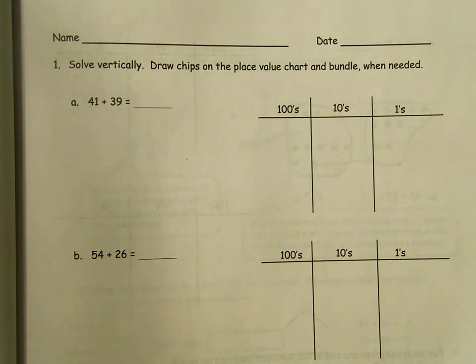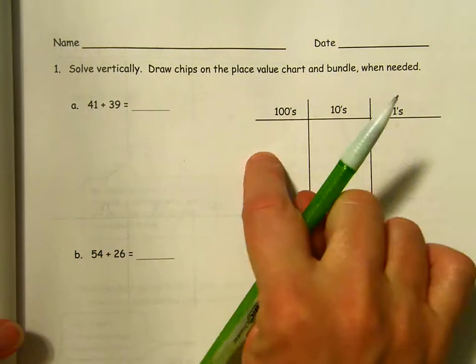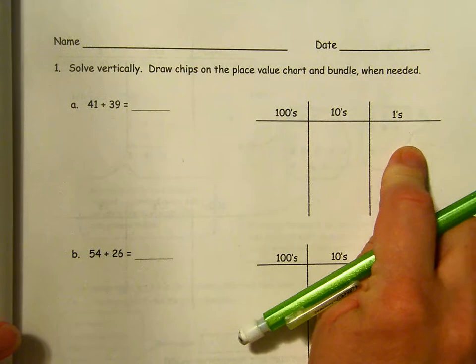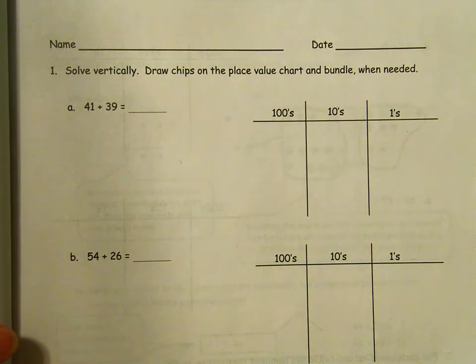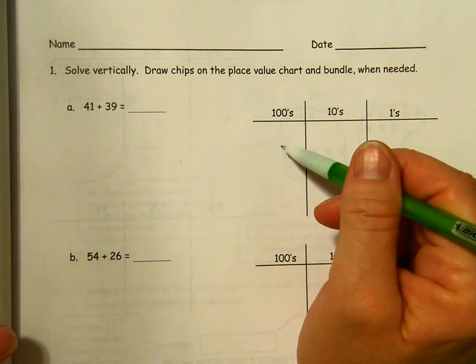Hey there! We are here on Lesson 20 Homework in the Succeed book. We are on page 87 and we are going to be solving. We're going to draw chips in our place value chart. We'll bundle when we need to if we need to compose a 10 or if we need to compose a hundred.